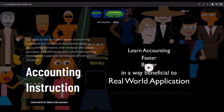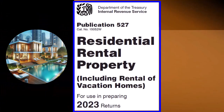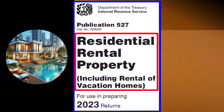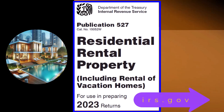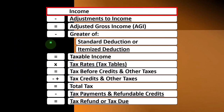For a commercial-free experience, consider subscribing to our website at accountinginstruction.com or accountinginstruction.thinkific.com. Most of this information can be found in Publication 527, Residential Rental Property Including Rental of Vacation Homes, tax year 2023, available on the IRS website at irs.gov.